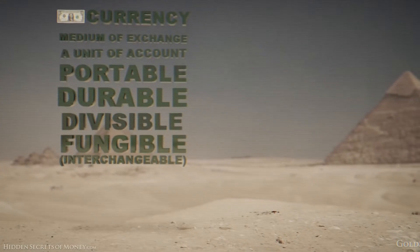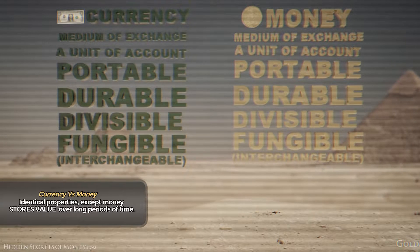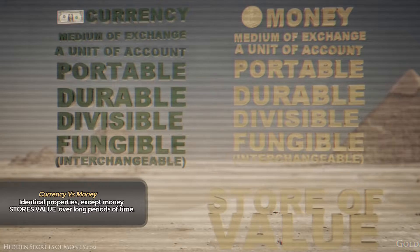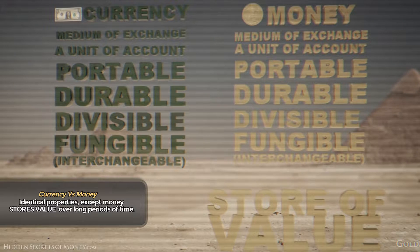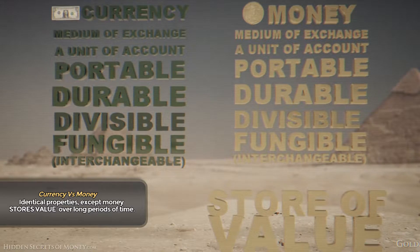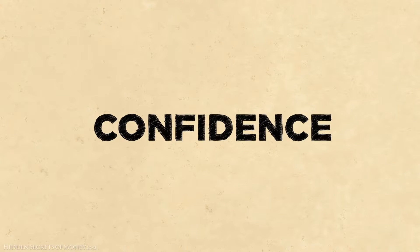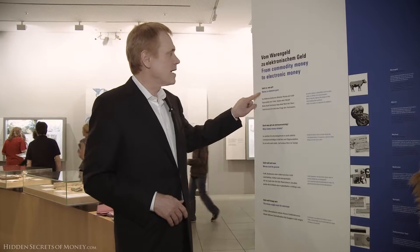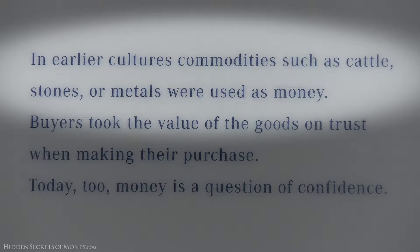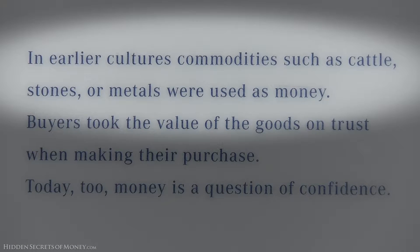In episode one, we learned that real money has to fulfill certain properties in order to function, but 2,600 years after its emergence, people still confuse money with currency, even the so-called experts. The museum has some displays about what money is. The first example says money is whatever goes — in earlier cultures, commodities such as cattle, stones, or metals were used as money.